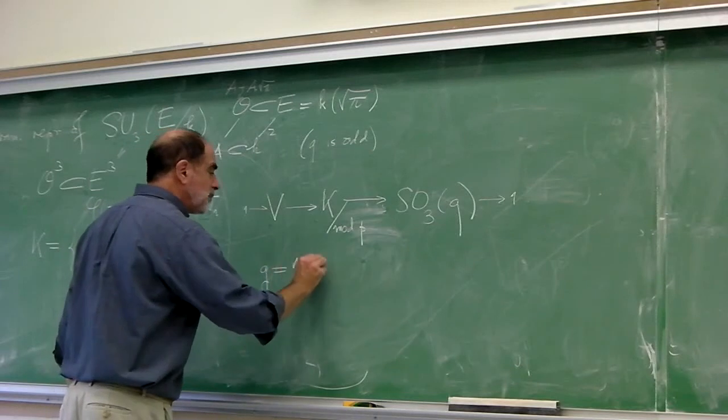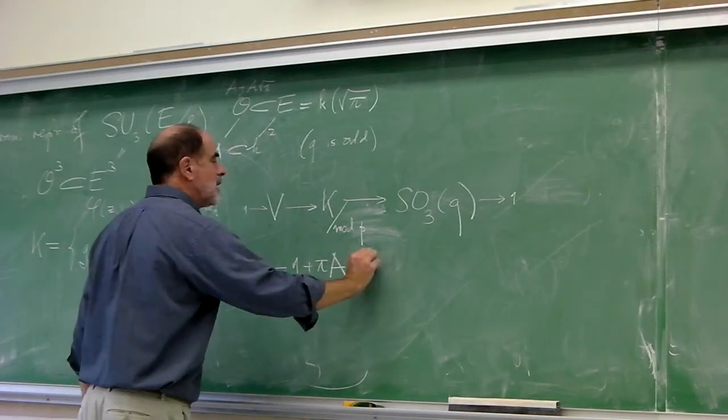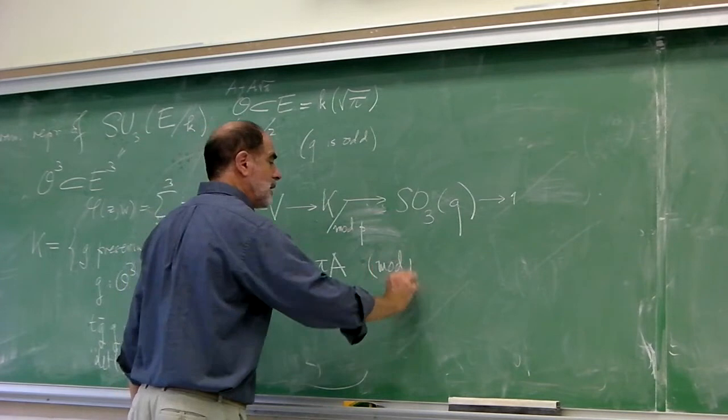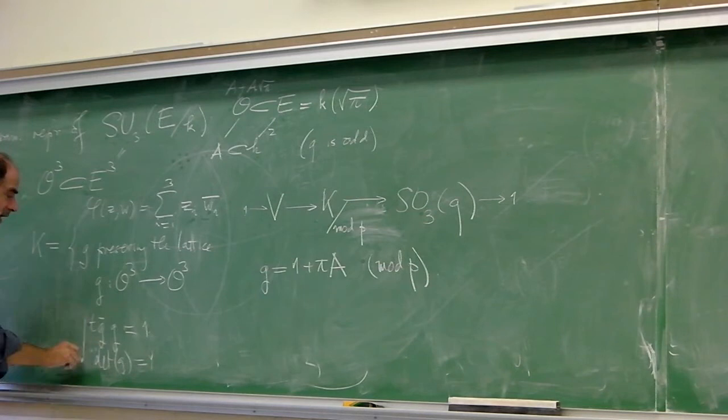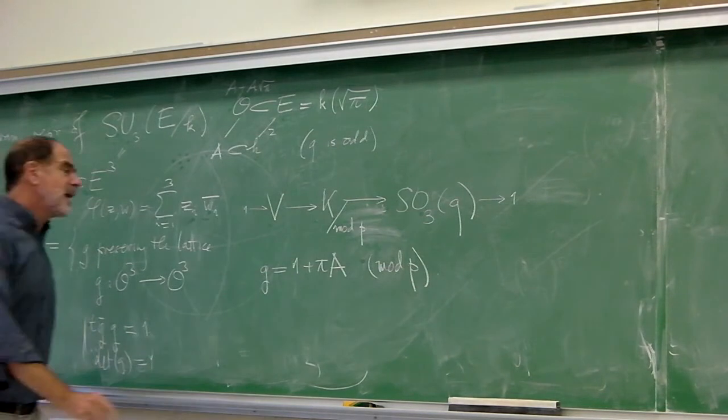Which is like 1 plus pi times A, mod P, right? Because it reduces to the trivial element here. And it has to satisfy these things. And when you work that out, you get this.